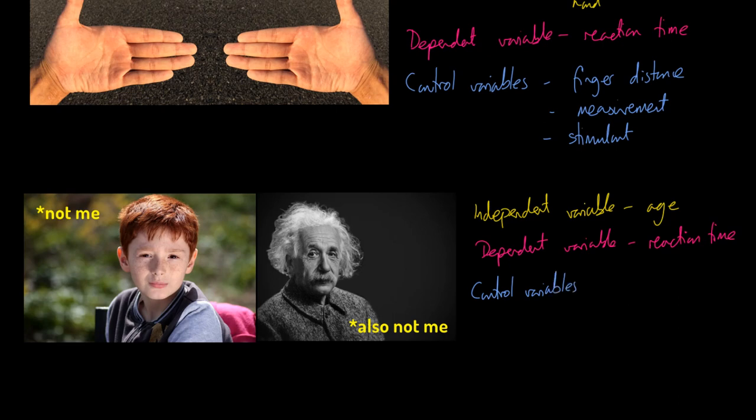The control variables—well, let's see if we can come up with some new ones. I mean, we'll take as read that we're going to control the finger distance and the measurement and the stimulant. But what about stuff like fatigue? Are they both equally rested? Something like the degree of practice that they've had: if the younger person has loads of practice before they have their official test measurement, that gives them an advantage over an older person who has had no practice.